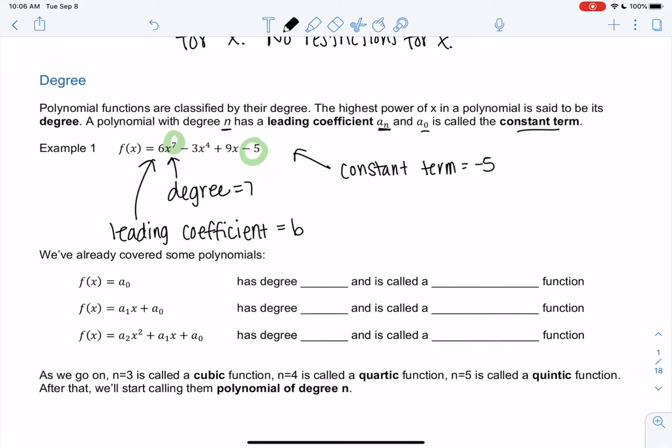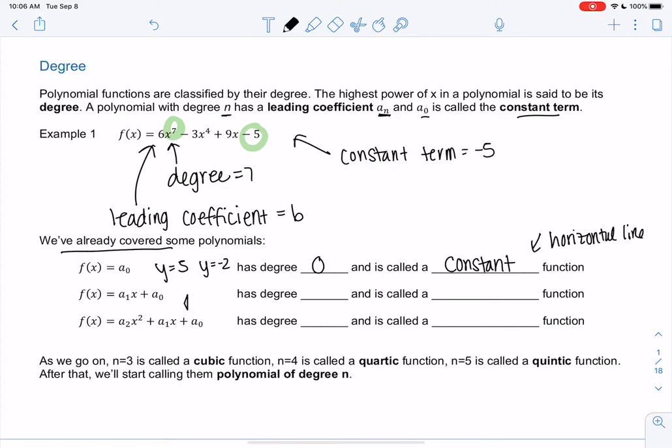We don't have to memorize definitions, but we want to be familiar with the words so we can talk about them. Let's look at some examples we've already covered. f(x) equals a0 would be like y equals 5 or y equals negative 2 - horizontal lines. They have degree 0 and are called a constant function. Linear would be, in polynomial notation, a1x plus a0, but that would be the same as having 3x plus 1, mx plus b.